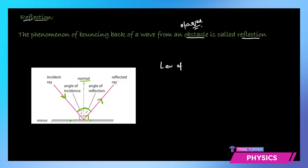There is a very important law of reflection which we often use in many problems. The angle of incidence is always equal to the angle of reflection. That means whatever angle of incidence there is — say 30 degrees — the angle of reflection would also be 30 degrees.